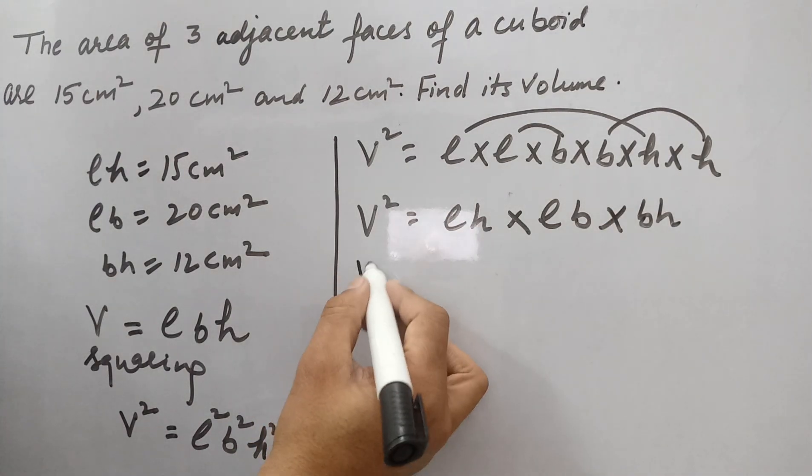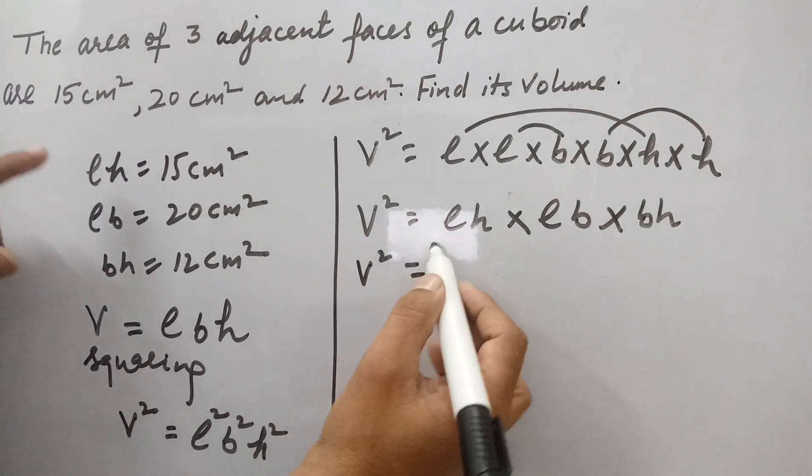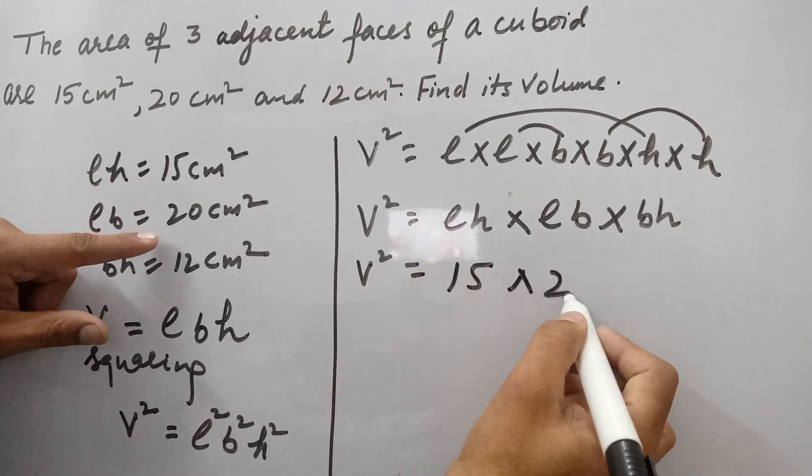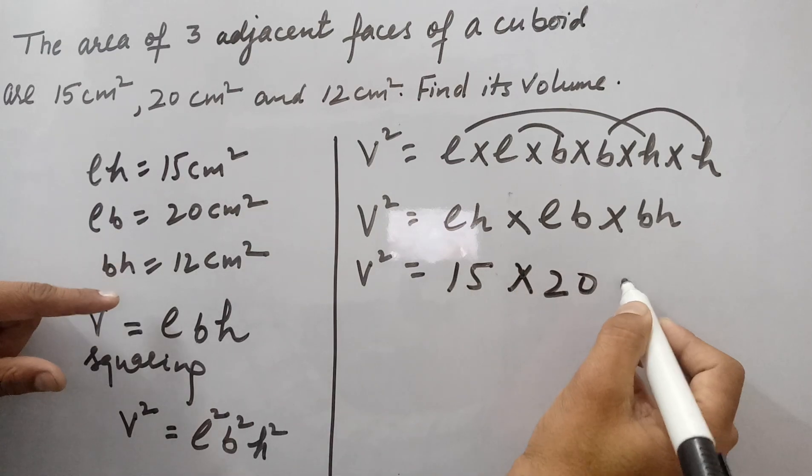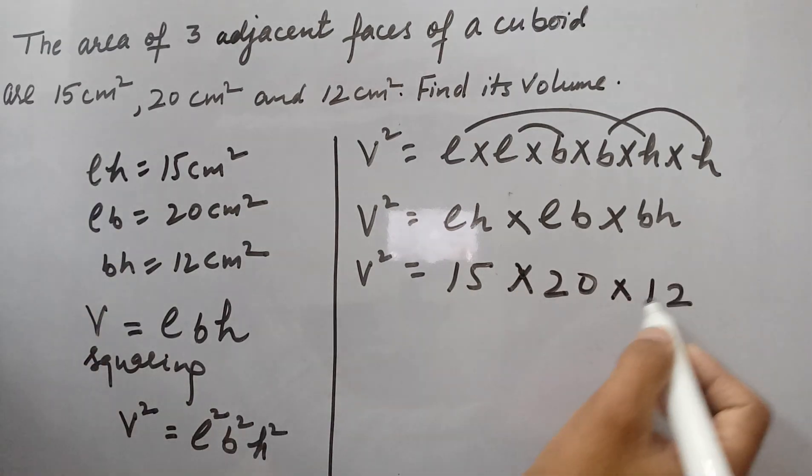So what we do, we will fill the value of these all. LH we have 15 cm², LB we have 20 cm², and BH is 12 cm².